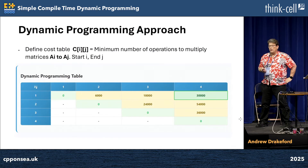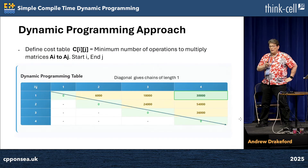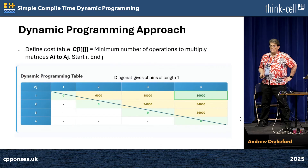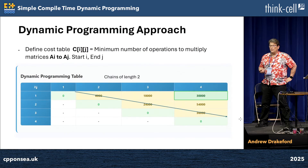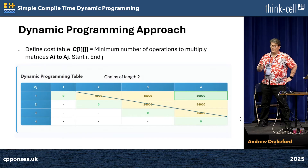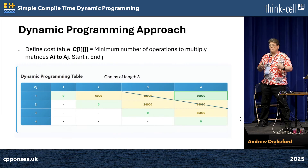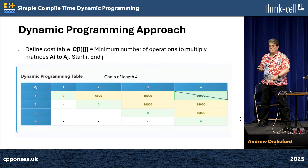We go across the table like this. Chains of length 1 — we just multiply one matrix: (1,1), (2,2), (3,3) — this has zero cost because we're not doing any multiplication. Next we move on to chains of length 2: 1 to 2, A1 times A2, A2 times A3, A3 times A4, and put the cost in — these are just matrix multiplication costs. Chains of length 3 have variations; there are two ways we can do this. We put the cheapest value in and store the split points. And finally, that's our target.